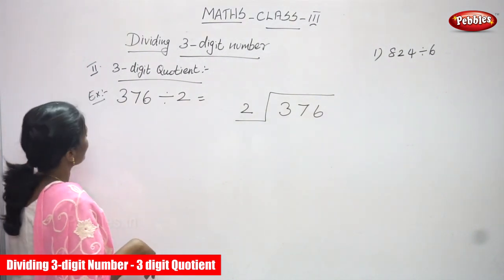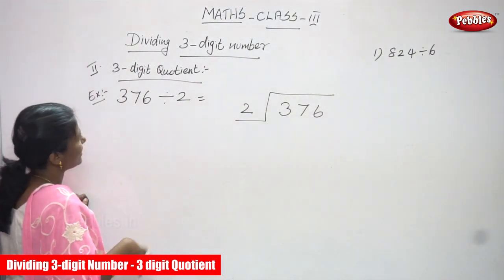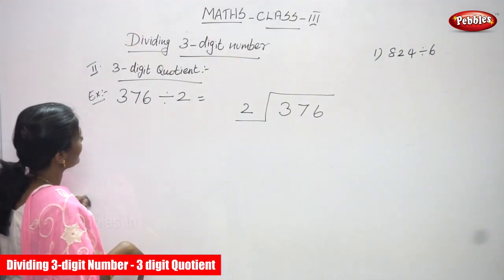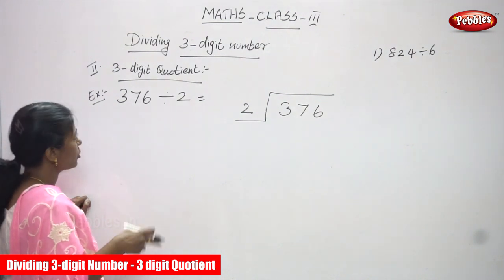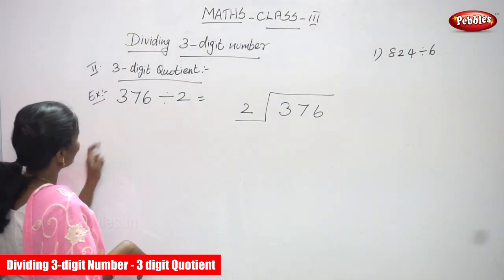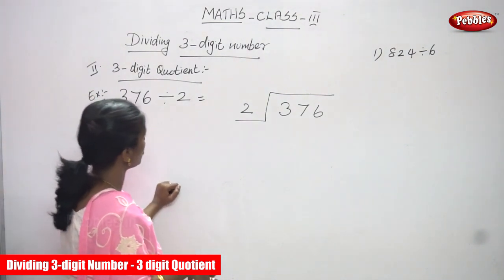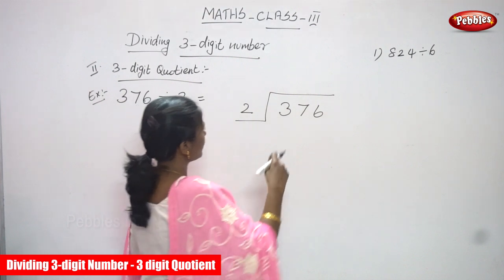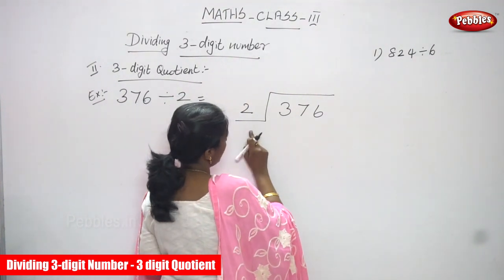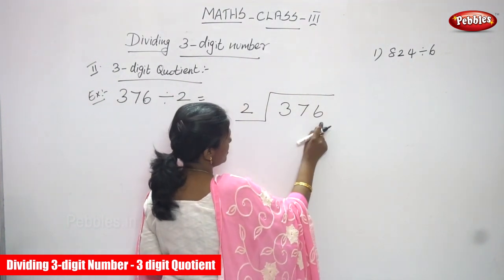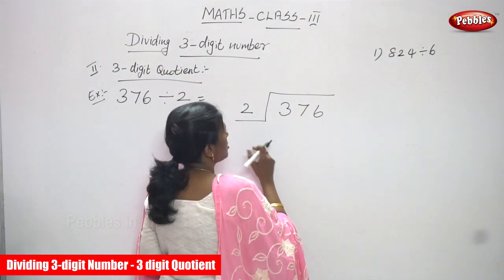Now we are going to see 3-digit quotient. It is also dividing a 3-digit number to get a 3-digit quotient. First we have seen 2-digit quotient. Now, 376 is going to be divided by 2. This is a 3-digit number going to be divided by 2.